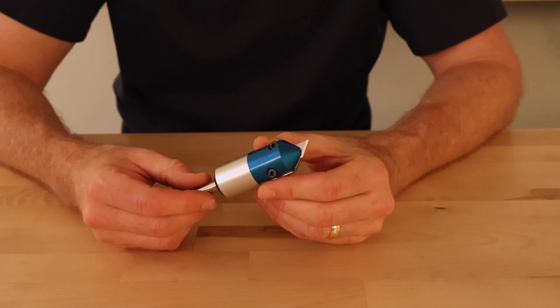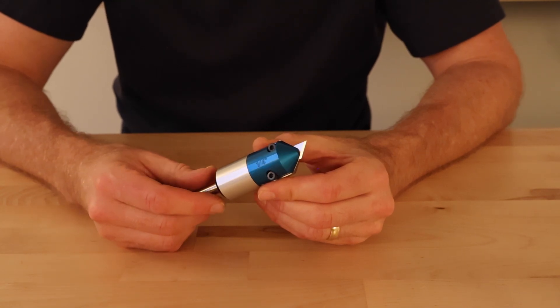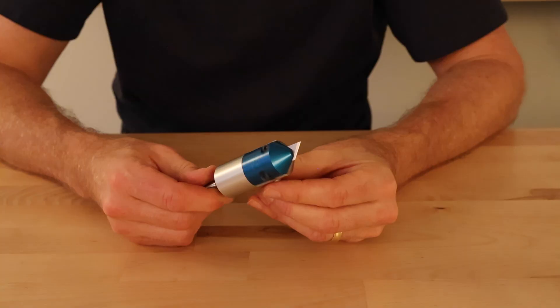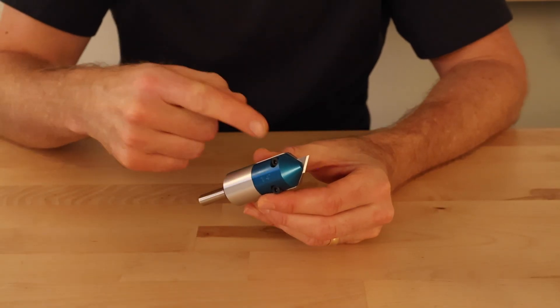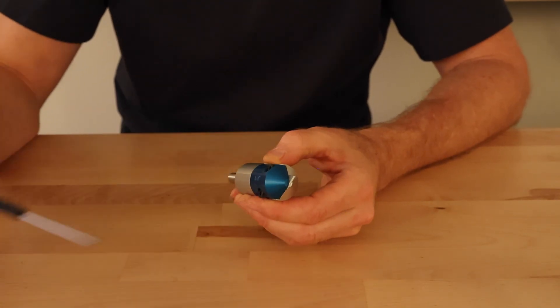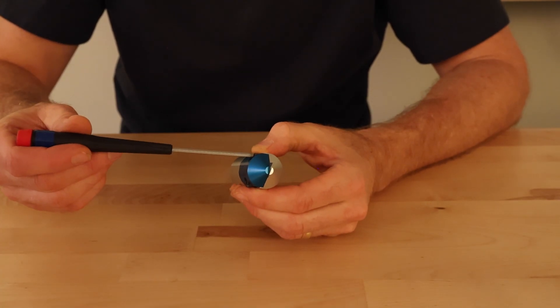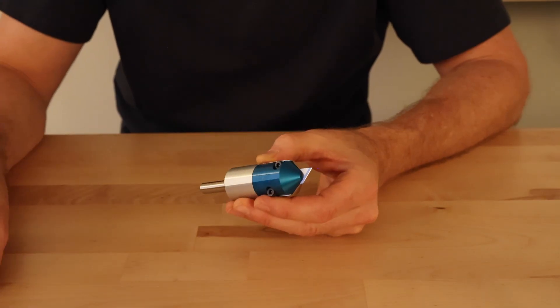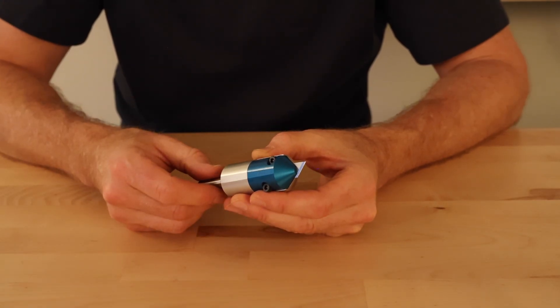So this is our generation three cylindrical body model. It uses precision X-Acto style blades, which are more finely ground than a utility blade, so they're a little sharper. There are two bolts here, M4 bolts you loosen to take the blade out. You can change it on the machine.